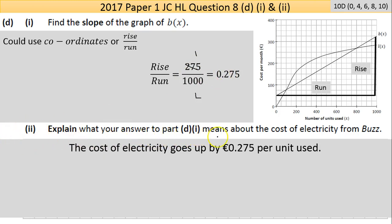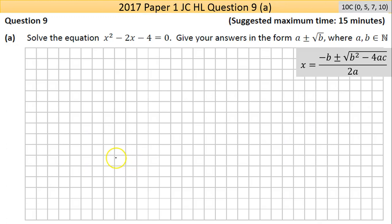Part D2: Explain what the answer to part D1 means about the cost of electricity from Buzz. That means for every unit used it's going up by 0.275 cents, or 0.275 of the euro. I'm going to say 27.5 cents or 0.275 of the euro.